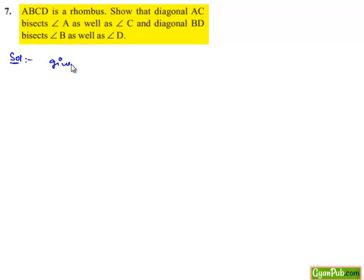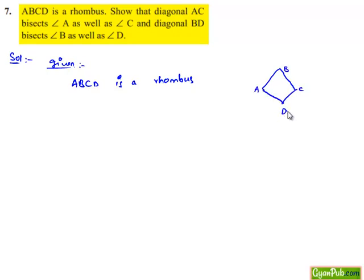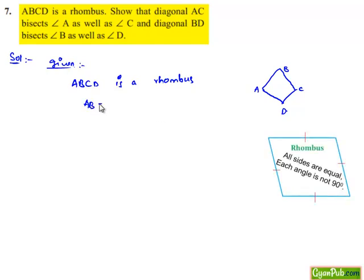It is given that ABCD is a rhombus. We know the properties of a rhombus: all the sides are equal, that is AB is equal to BC is equal to CD is equal to DA, and the diagonals bisect each other perpendicularly. So here the diagonals are AC which is perpendicular to BD.